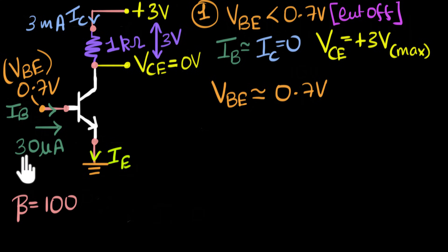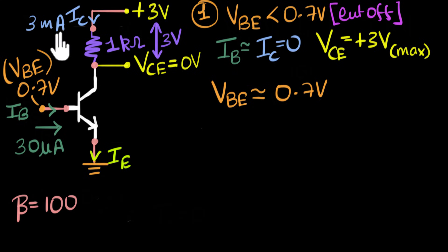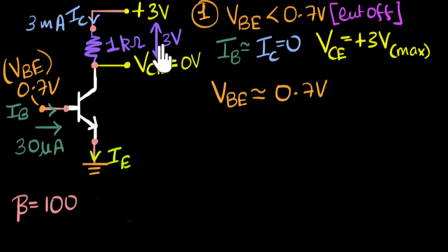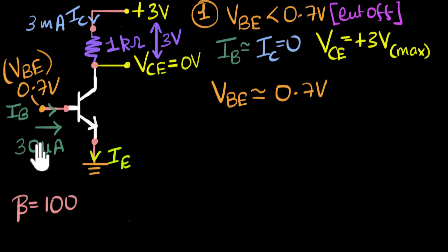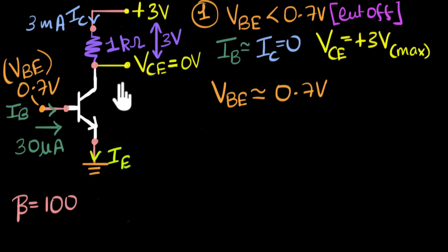So the output current will not increase anymore — it's going to stay at three milliamperes. Even if you increase the input current beyond this to 40, 50, or 60 microamperes, our output current will just not go beyond three milliamperes. This is the critical state — you cannot possibly get more than three milliamperes output current. So we now have two conditions when VBE has hit 0.7V.